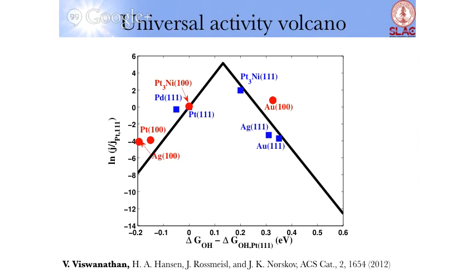What is seen is that the (100) facet always lies to the left of the (111). And left in the scale means that it binds stronger. This is not surprising because the (100) facet is more open. So it wants to bind intermediate stronger.